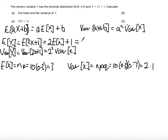The expectation of Y will be 2 times 3 plus 1, which equals 7. And the variance of Y will be 4 times 2.1, which is 8.4. So that was Part A.